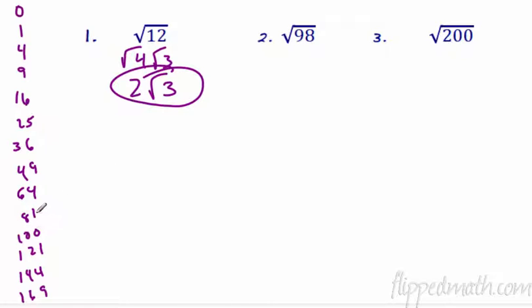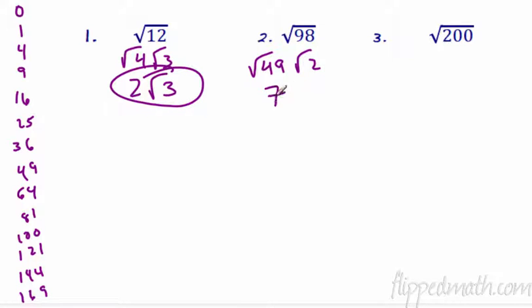98: is 81 a factor of 98? No. Is 64? No. Is 49? Yes! Square root of 49 times square root of 2. What is the square root of 49? 7. So this one is 7 radical 2. Done. This is so simple — trust me.